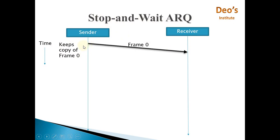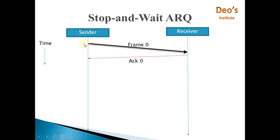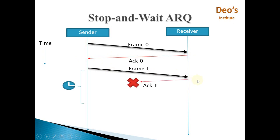If acknowledgement is not received from the receiver, then frame 0 has to be resent. In the first case, frame 0 is sent by the sender and the acknowledgement is received correctly. When the correct acknowledgement is received, the sender will send frame 1.